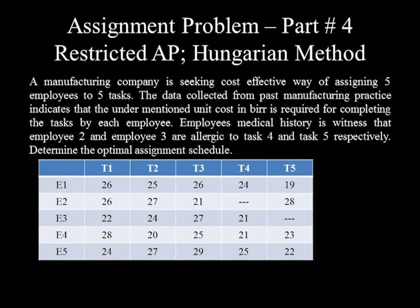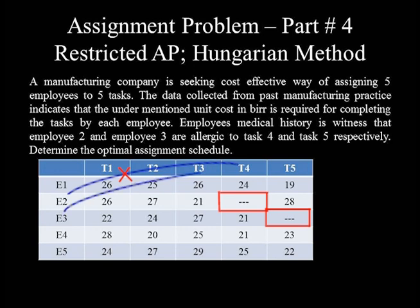A manufacturing company is seeking to determine a cost-effective way of assigning five employees to five tasks. The data collected from past manufacturing practice indicates the cost in birth required for completing the tasks by each employee. Employees' medical history shows that Employee 2 and Employee 3 are allergic to Task 4 and Task 5, respectively. The question is: determine the optimal assignment schedule. The broken lines in the matrix indicate that Employee 2 can't be assigned to Task 4 and Employee 3 can't be assigned to Task 5 because of their health problem.